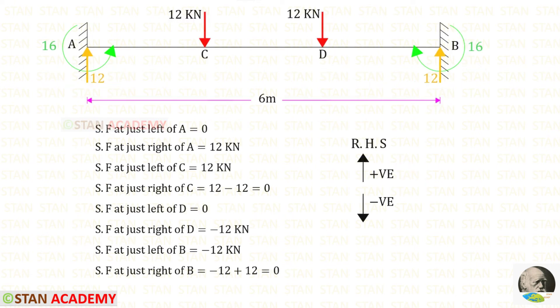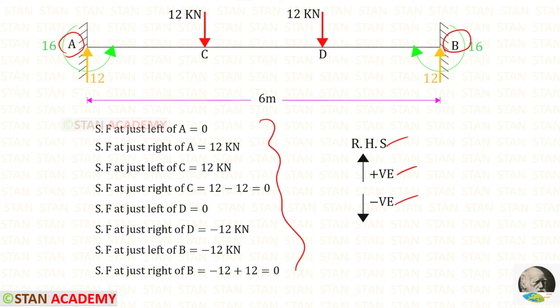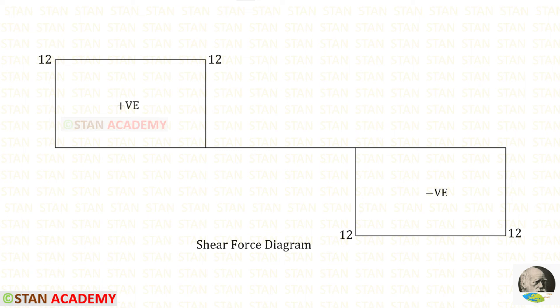Now we are going to draw the shear force diagram. I am going to find the shear force values from point A towards point B, moving towards the right-hand side. Upwards will be positive and downwards will be negative. Using that rule we can find the shear force values. Here you can see the shear force diagram.